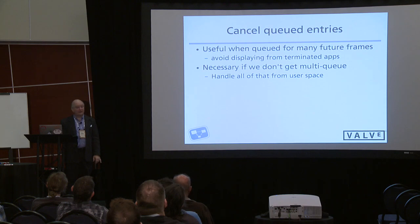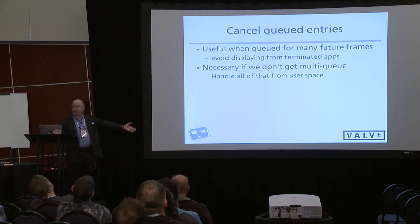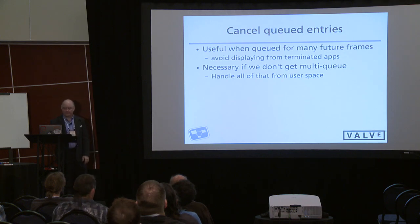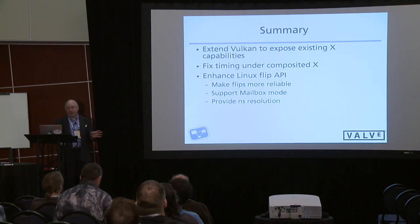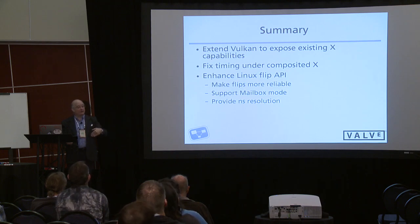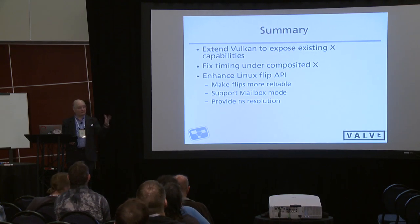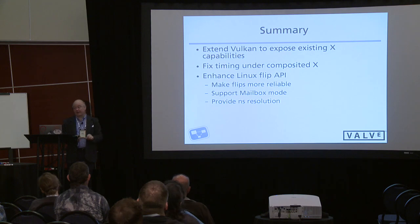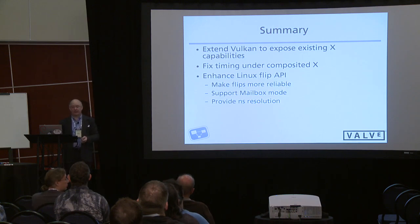I would love to be able to cancel queued entries — if I queue 30 frames ahead I want to be able to hit escape in my movie player and have the movie stop immediately rather than a second later. Cancellation is especially necessary without multiple queues, since I need to cancel what's going on and replace it with a future entry. In summary, what I'm working on now is extending Vulkan to expose existing X capabilities and existing Linux kernel capabilities in X, Wayland, and direct-to-display environments. I want to fix timing under composited X beyond the hack I described, and I want to replace the Linux flip API to have all the capabilities I've talked about.